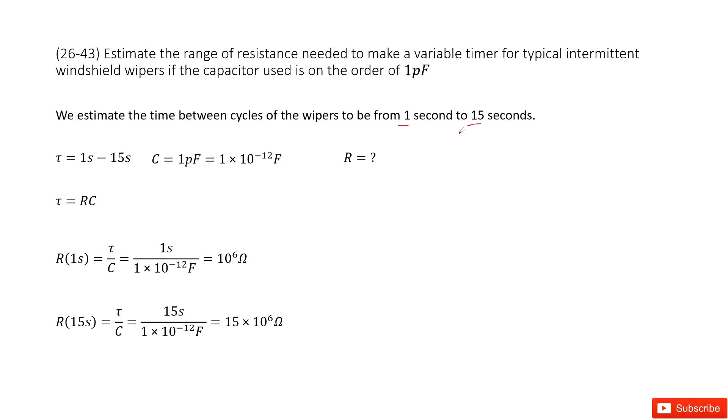This is the time constant in the RC circuit. So the time constant is in the range of 1 second to 15 seconds.